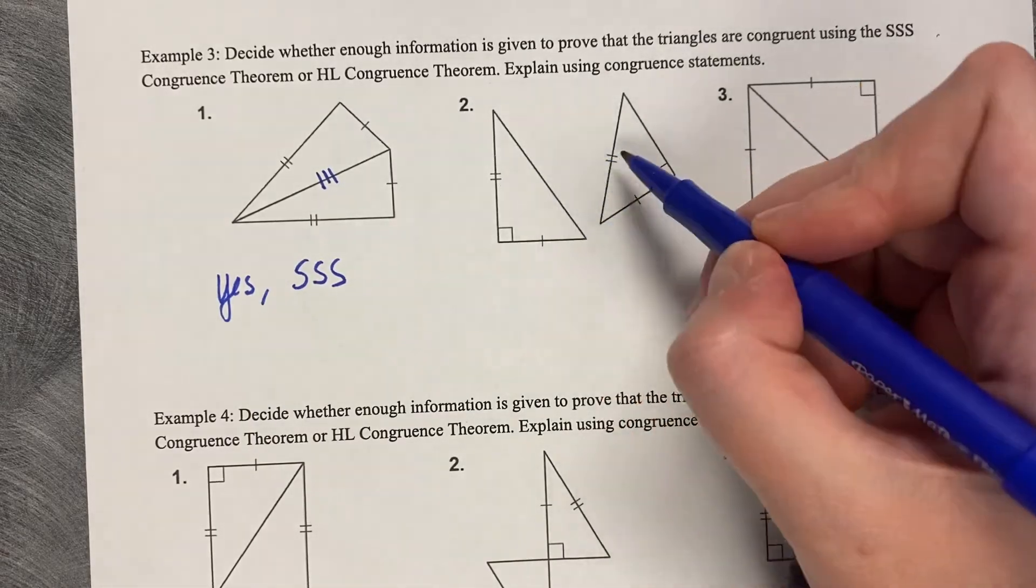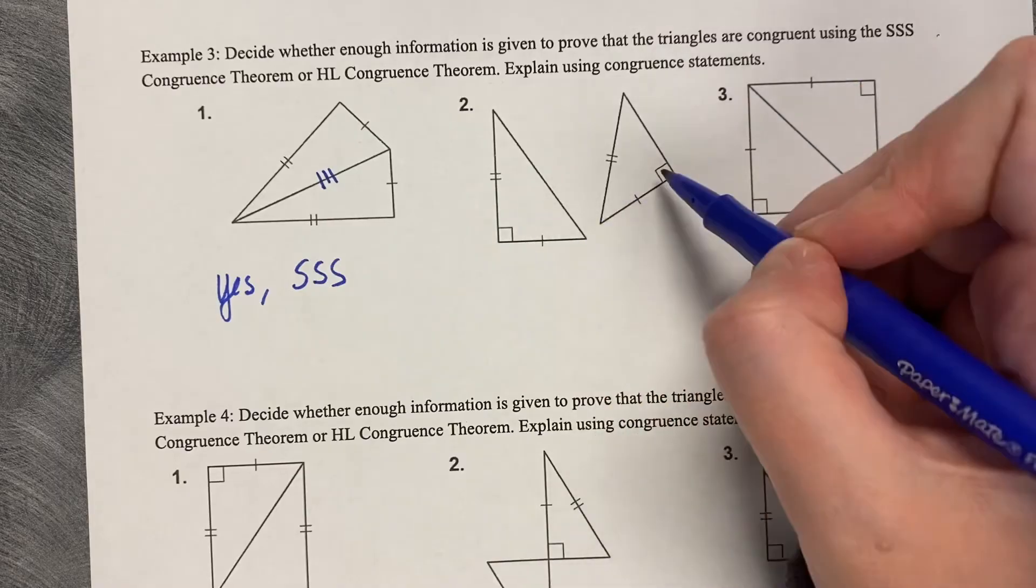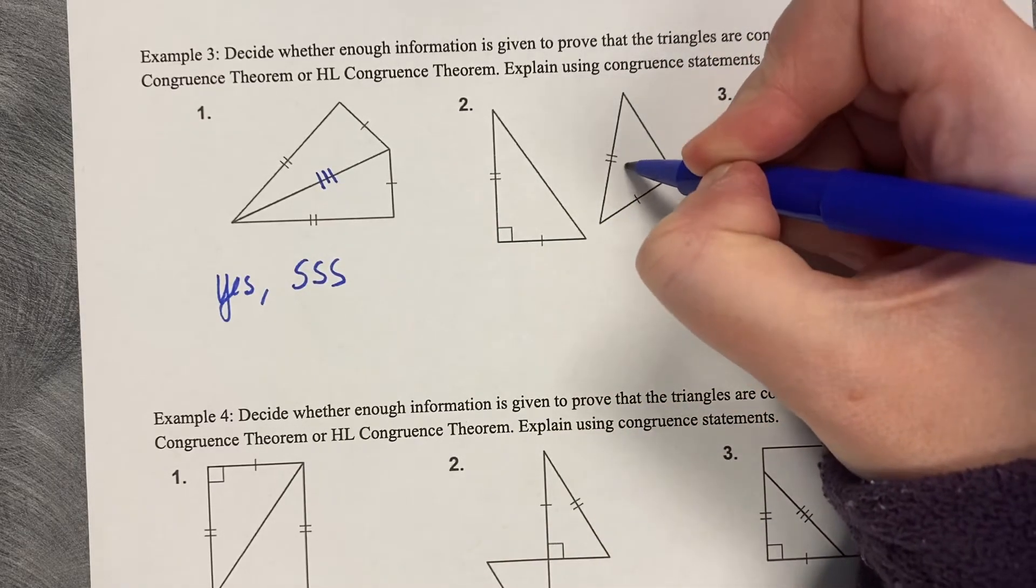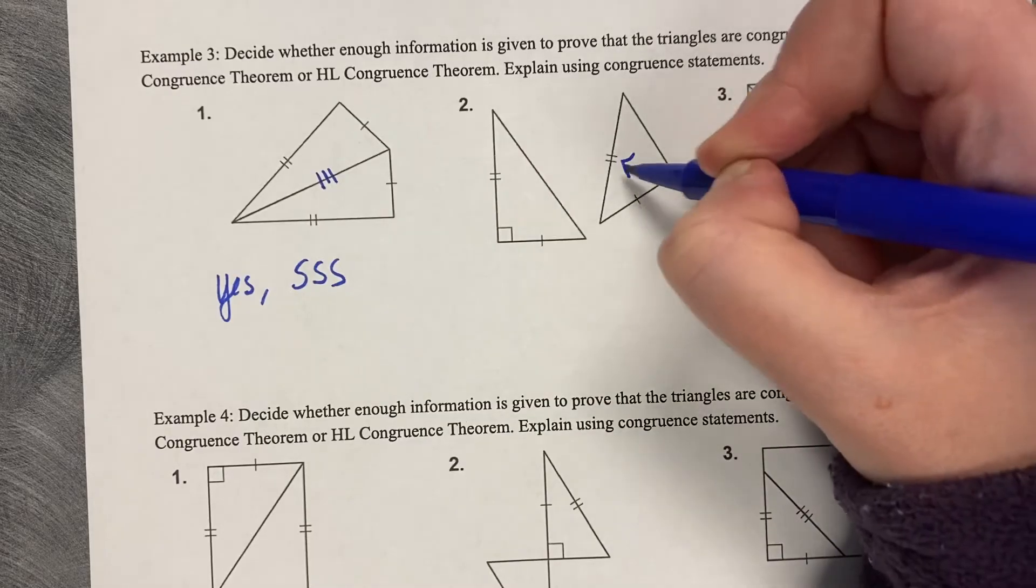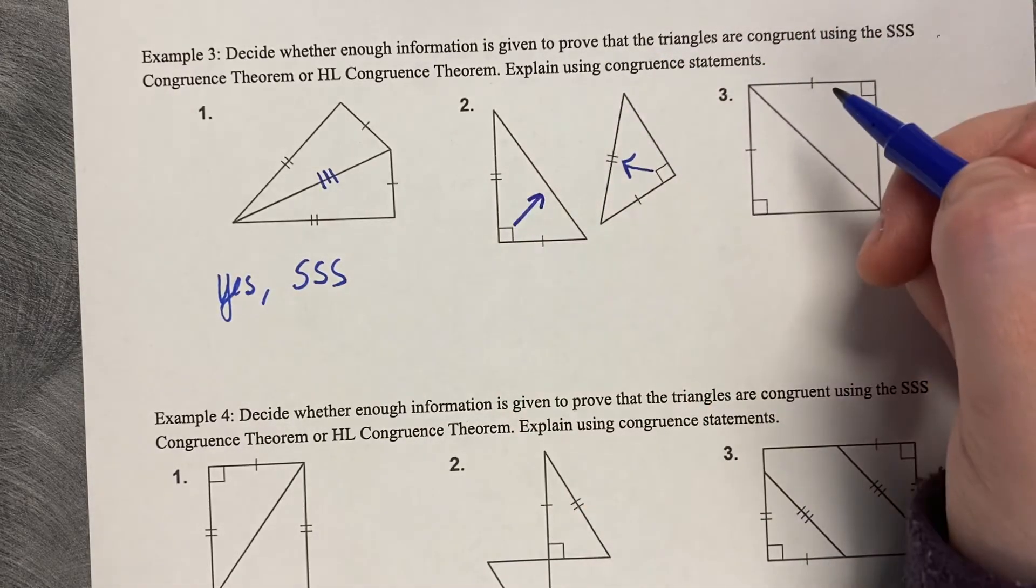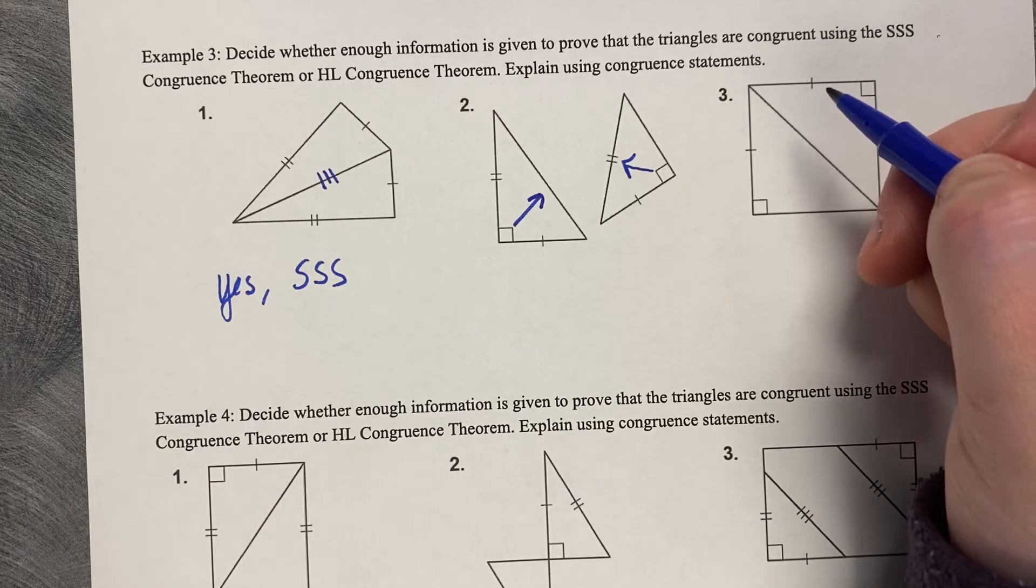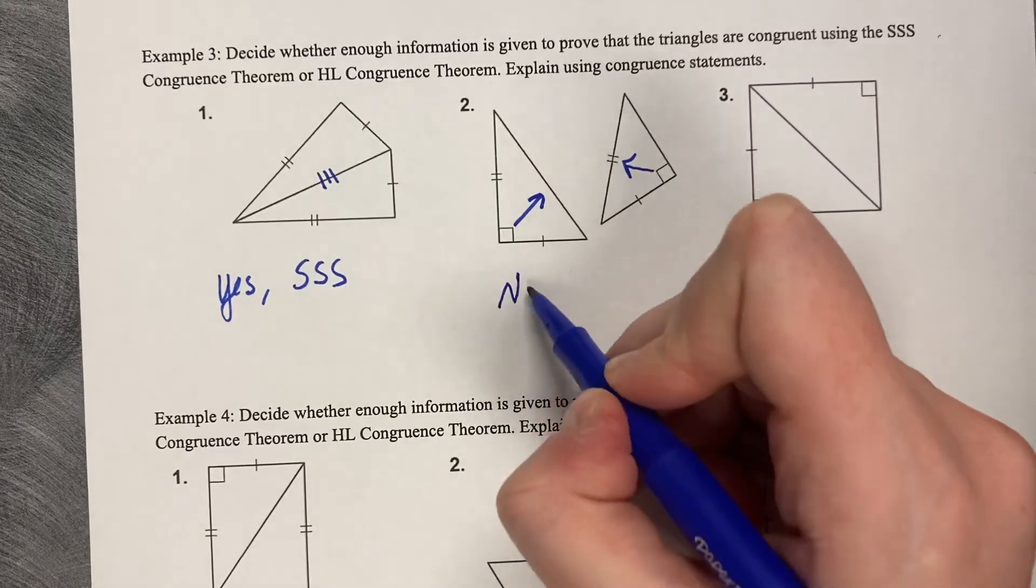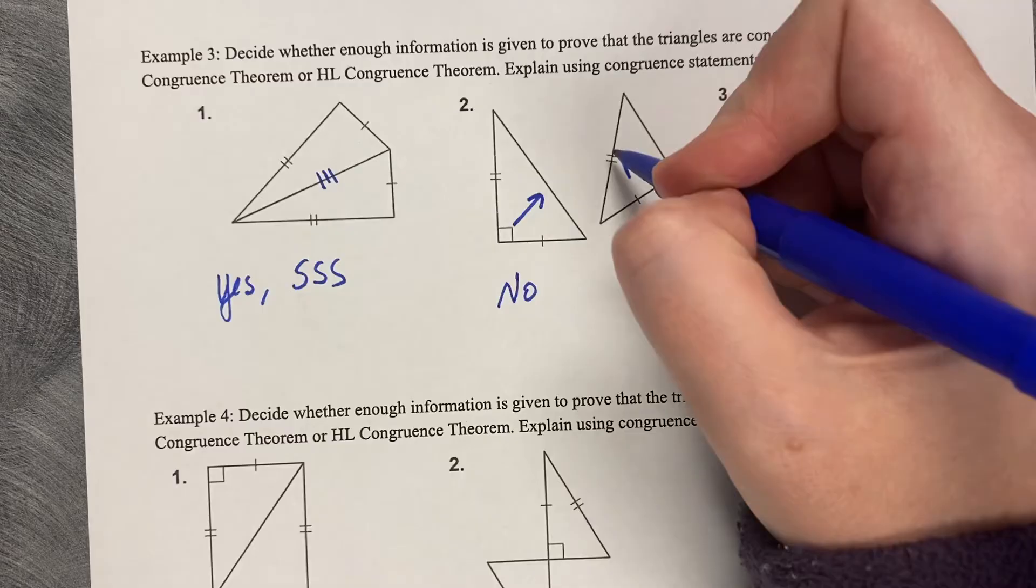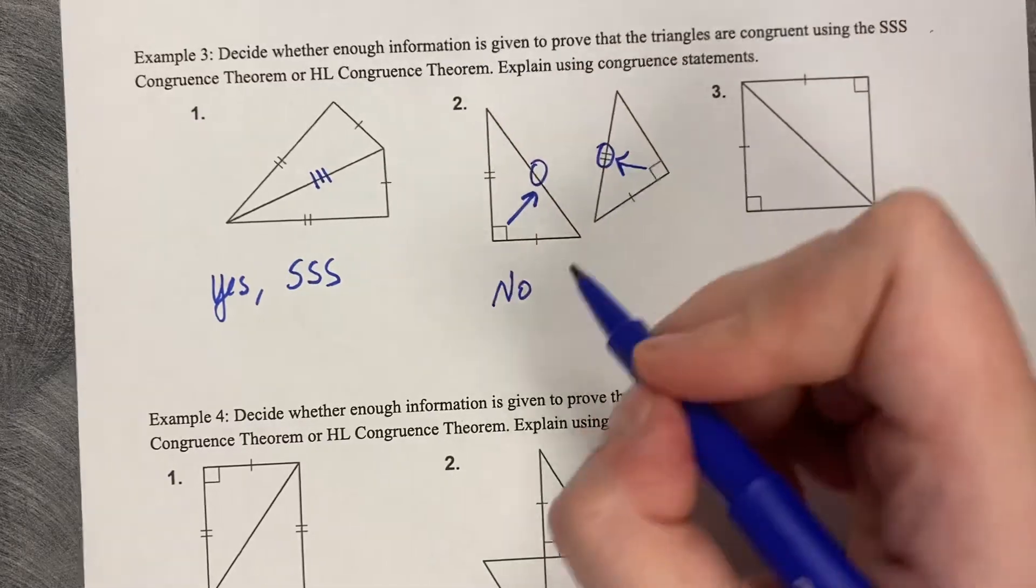One for one, two for two, and a 90-degree angle. But notice that the two for two on this one is across from the 90-degree angle, and on this one that is not the case. Be careful when matching your tick marks. This is no, because the hypotenuses don't match.